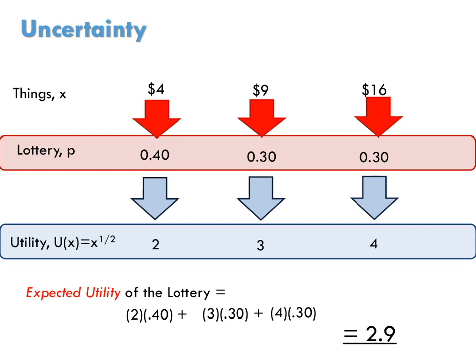Remember that the individual started with $9. $9 is worth 3 utils to her, given her utility function. This lottery, on the other hand, has an expected utility of only 2.9 utils. So based on her expected utility, she should just keep her $9. $9 with certainty is worth more to her than this lottery, even though the lottery's expected value is more than $9.